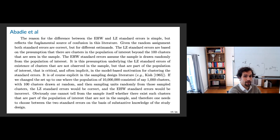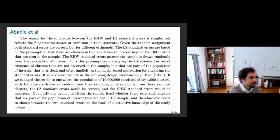Abadie et al. in this 2017 working paper argue that this intuition is really not right once you allow for any type of heterogeneity. They show you can have tiny within-cluster correlation and large clusters with a lot of data where the Liang-Zager estimator is enormous relative to the Eicker-Huber-White estimator — but you really shouldn't be clustering. The reason for the difference between EHW and Liang-Zager standard errors reflects a fundamental source of confusion: given random assignment, both standard errors are correct, but for different estimands. Liang-Zager presumes there are clusters in the population beyond those seen in the sample, while EHW assumes we see all clusters and randomization is individual-level.